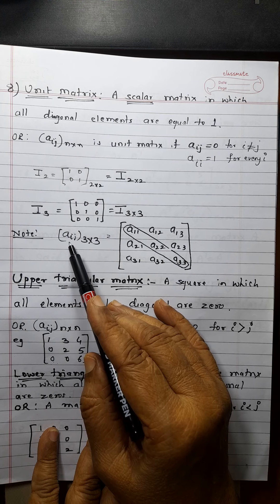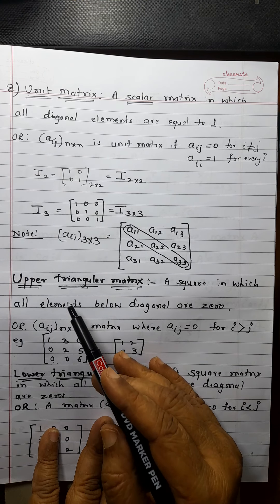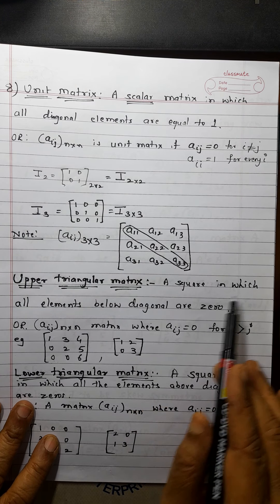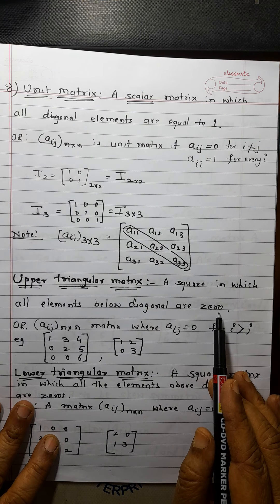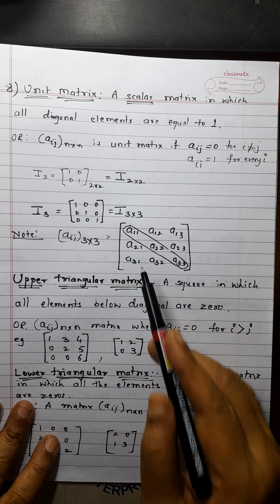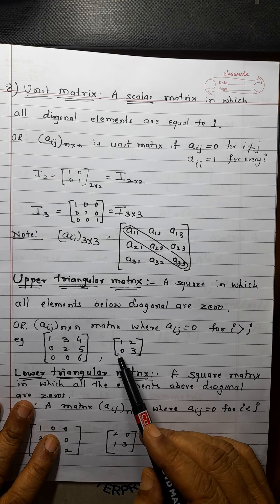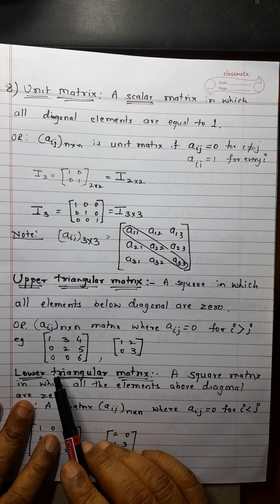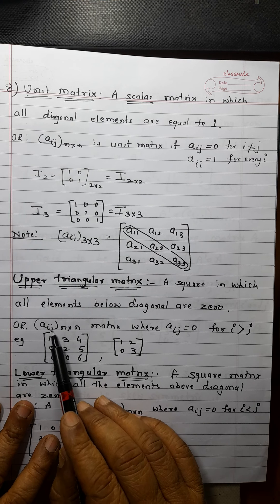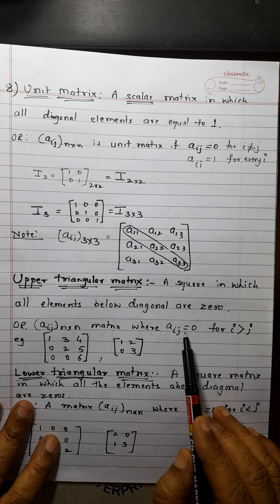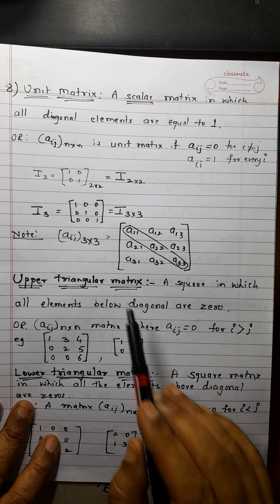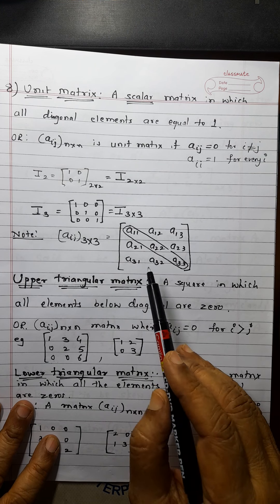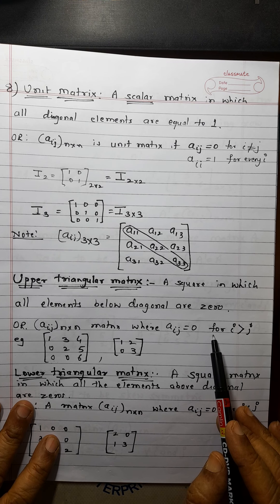An upper triangular matrix is a square matrix in which all elements below the diagonal are 0. Formally, for an n×n matrix, aᵢⱼ = 0 if i > j — below the diagonal all i values are greater than j. There may be some zeros above the diagonal as well, but below diagonal all must be 0. This will be useful for your CET exam.